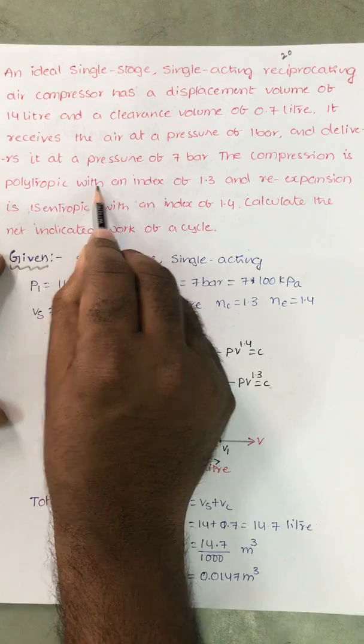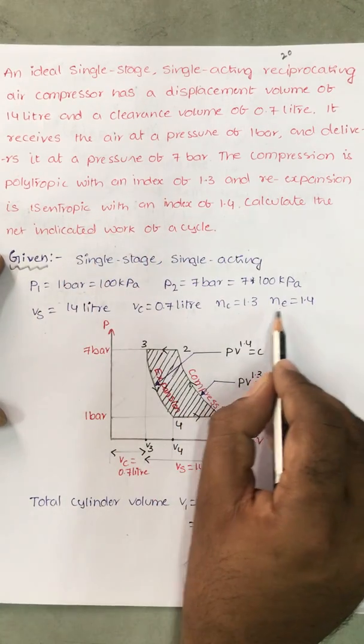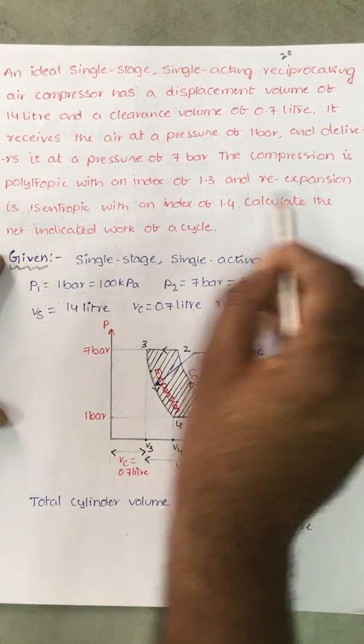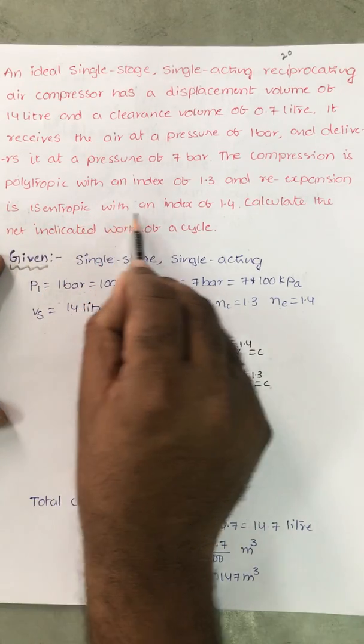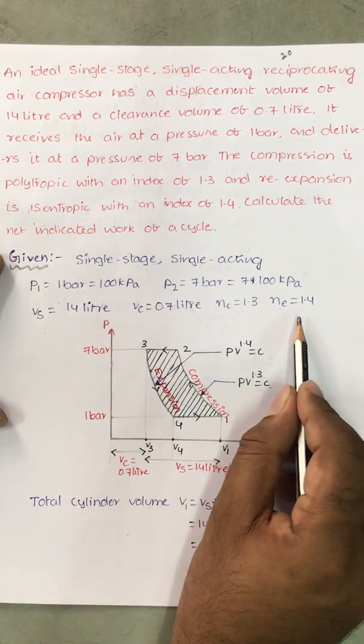Compression is polytropic with an index of 1.3. And expansion index is 1.4. Re-expansion is isentropic with an index of 1.4.